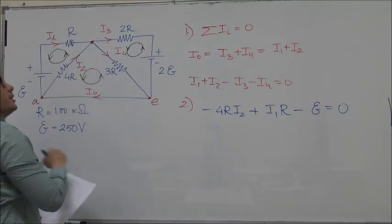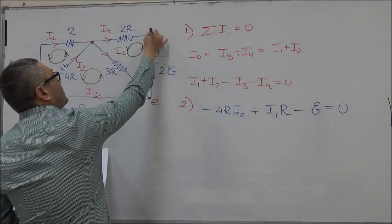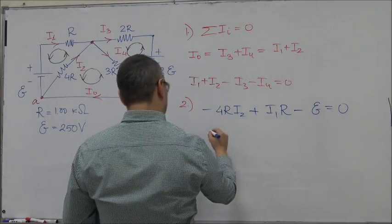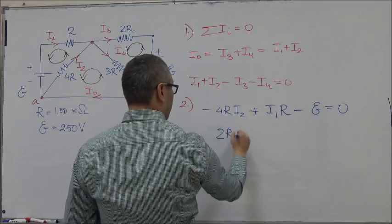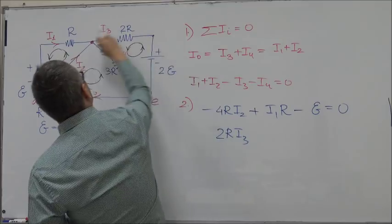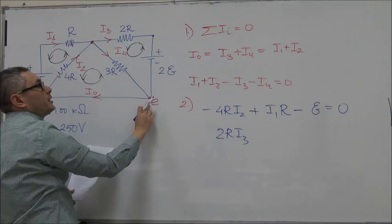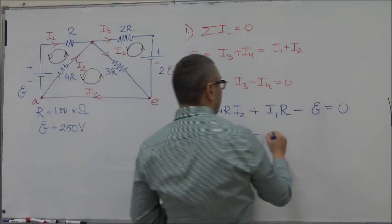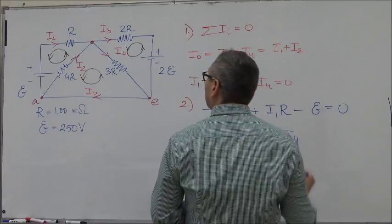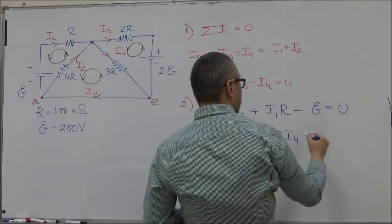We can do the same thing for this one. Again, let's start with this point moving this way, so this would be 2R I3. We're moving from here to here, from a lower potential to a higher potential, and then here from a higher potential to a lower potential, so this would be minus 3R I4. Then from here to here, from lower to higher it increases, so plus 2E equals zero.